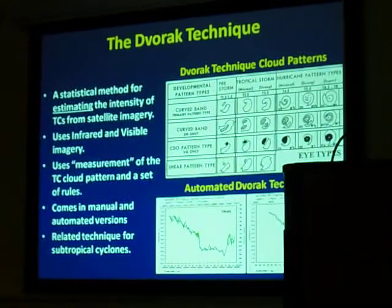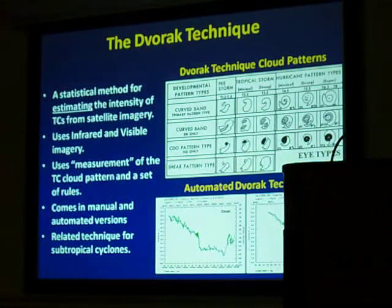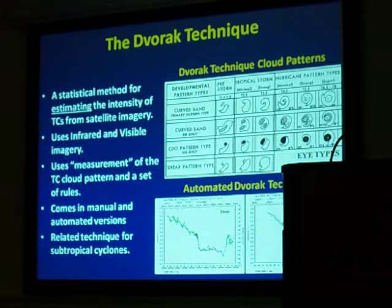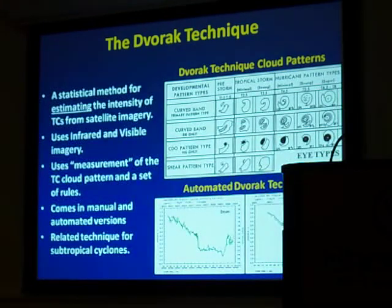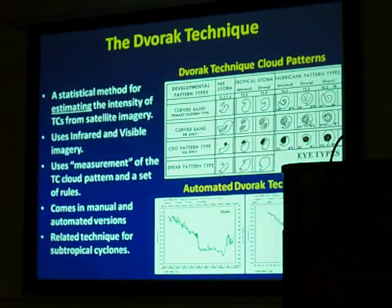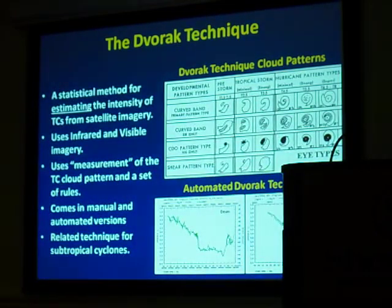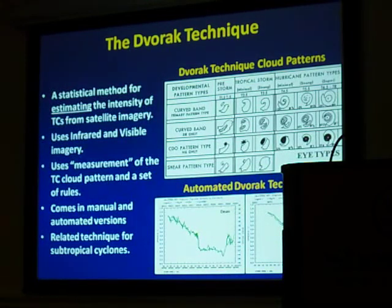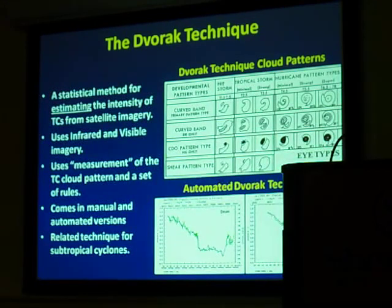Vern Dvorak's work has never been published in the peer-reviewed literature — it's been published only as a National Weather Service technical memorandum — and we don't know exactly how he arrived at some of what he did. It's still sort of a mystery to us, but it still works today. What's key is that we use it to estimate the intensity of tropical cyclones; it's not a direct measurement, but we infer the intensity by looking at cloud patterns.